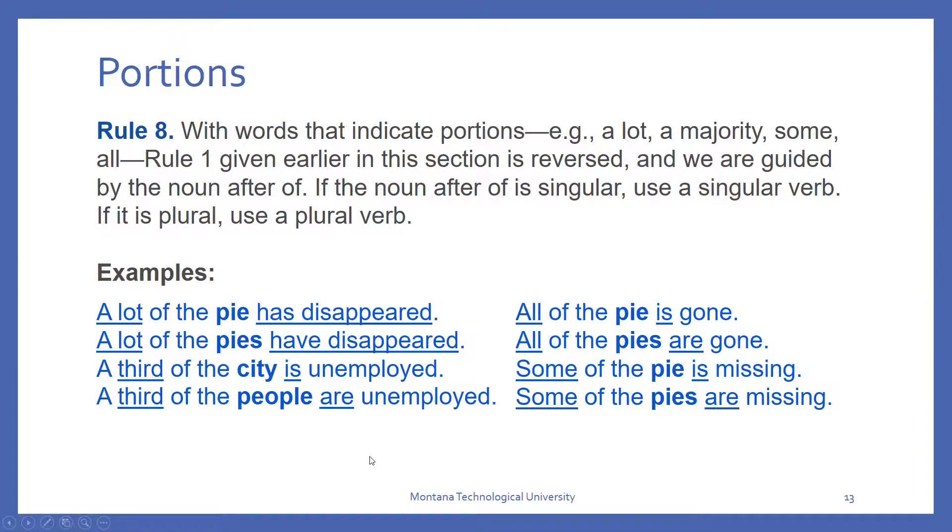So, when a word indicates a portion, a lot, majority, sum, etc., we reverse, we undo a rule that we talked about already, and then we are guided by the noun after of. Man. So, in these examples down below, a lot has disappeared, well, has refers to pie. A lot have disappeared, have, in this case, refers back to pies. It is in our prepositional phrase. Same thing with the rest of these examples.